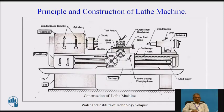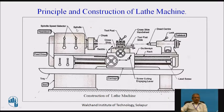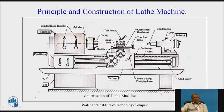The main elements of the lathe machine are the headstock, tailstock, feed drive, and carriage. In the headstock, there is a spindle mounted between two bearings. The spindle is driven by a motor through a driving mechanism — either gears or a belt — located at the back side of the lathe.